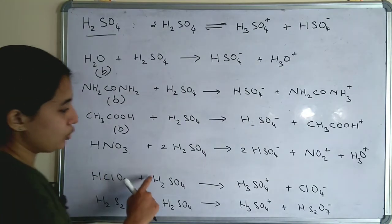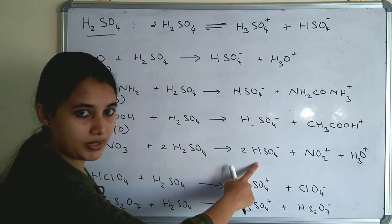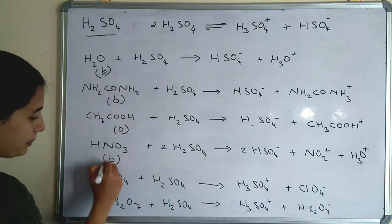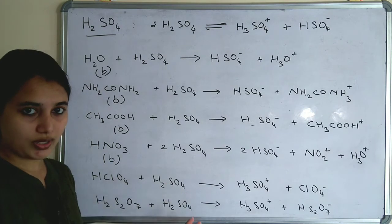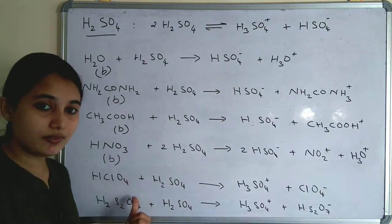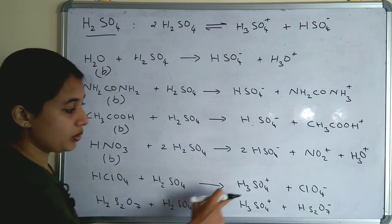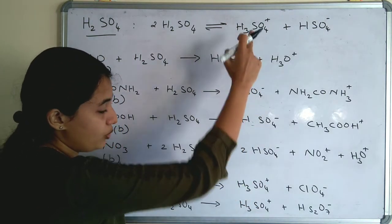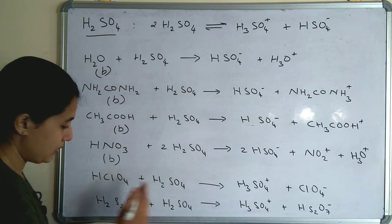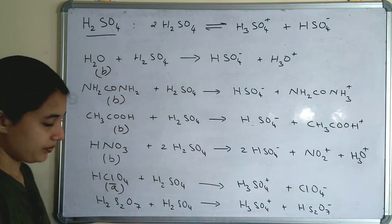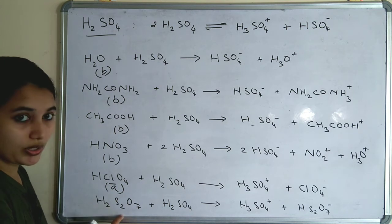HNO3 + 2H2SO4 → 2HSO4⁻ + NO2⁺ + H3O⁺. HSO4⁻ is obtained, so HNO3 behaves as a base in sulfuric acid. Perchloric acid (HClO4) is usually a strong acid, but in sulfuric acid it has higher acidity and acts as an acid, producing H3SO4⁺ and ClO4⁻ — HClO4 donates an H⁺, so it is an acid in sulfuric acid.